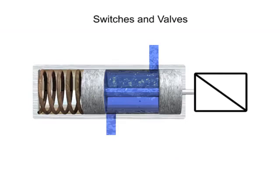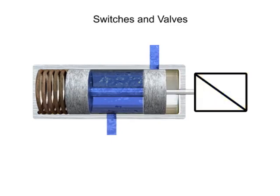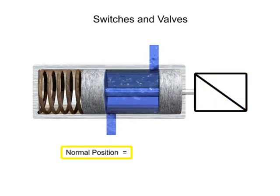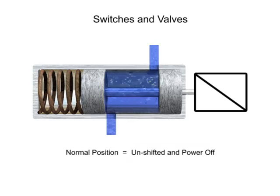Fluid valves are typically described as being either in the open or closed position. The open position allows the flow of fluid while the closed position prevents flow. The normal position of the valve is defined as the position of the valve when its spool is unshifted and the power is off. This means that any mechanical actuators, such as springs, are in their non-actuated positions.